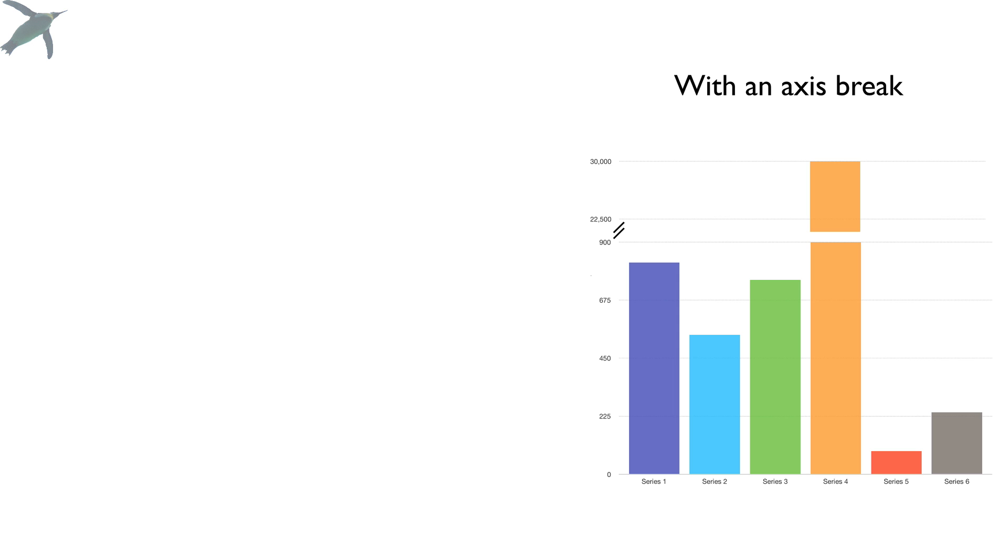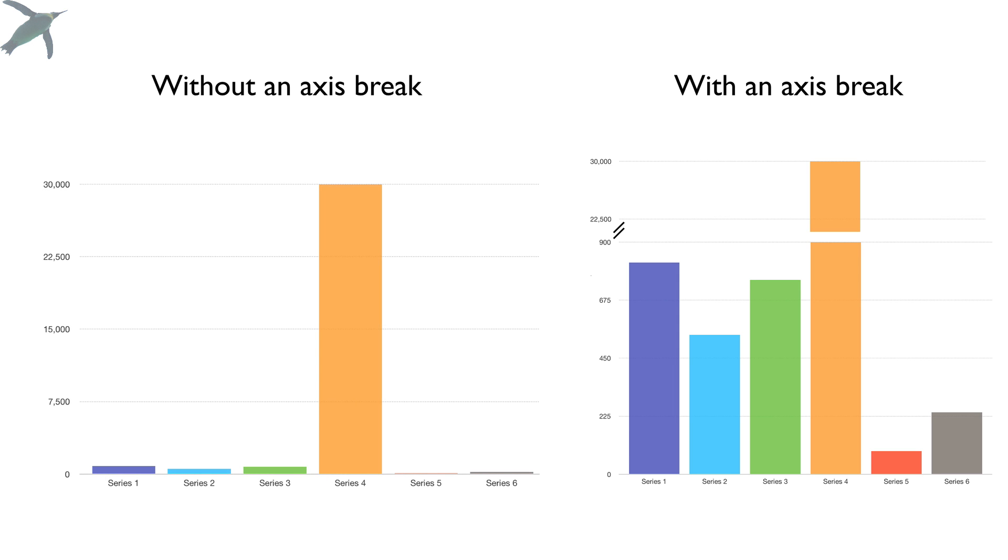So here you see the data set with an axis break. Now I'm going to show you the same set of data and I do not break the axis. Now you can see that because that Series 4 is so out of range compared to the others, what basically happens is you don't get to see anything in the other data sets. So this is a great example of when you would want to break your axis.